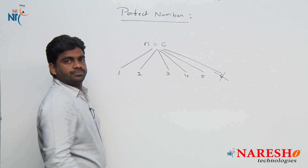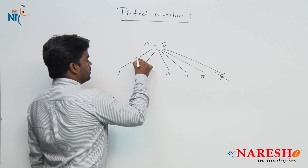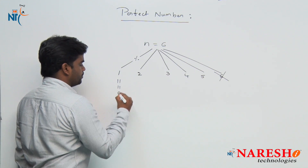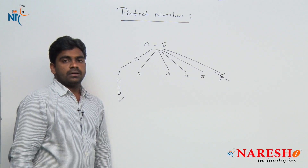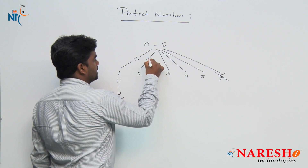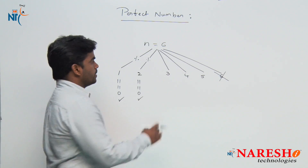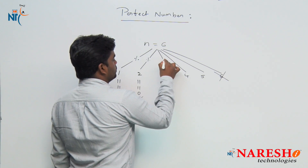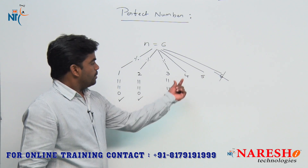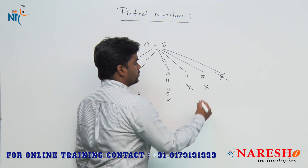1 is divisible by 6. Whenever you perform a mod operation, if the result equals 0, then it is a factor of number 6. When we divide N mod 2 equals to 0 — yes, it is a factor. And N mod 3 equals to 0 — yes, it is a factor. But 4 is not a factor of 6, and 5 is not a factor of 6.